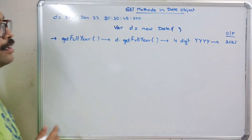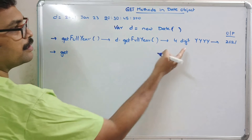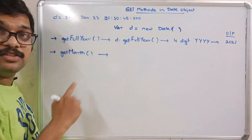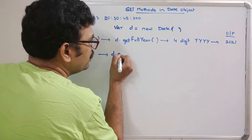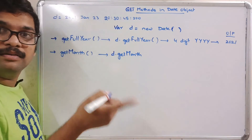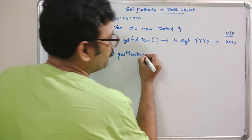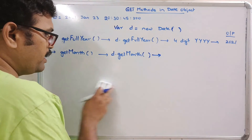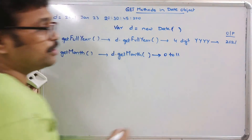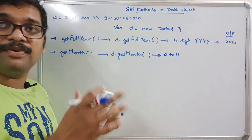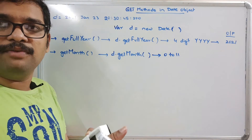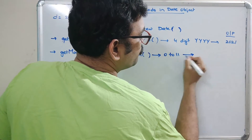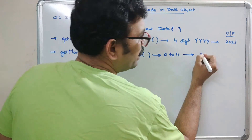The second method is getMonth(). The syntax is d.getMonth(). This will return a value from 0 to 11, because months are represented as numbers: 0 implies January and 11 implies December. So for January, the output will be 0.